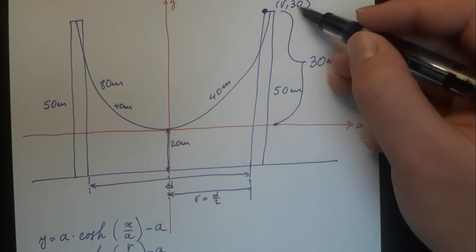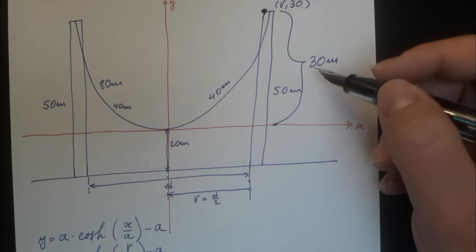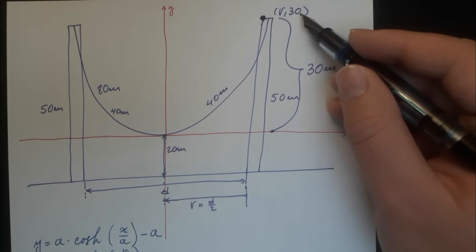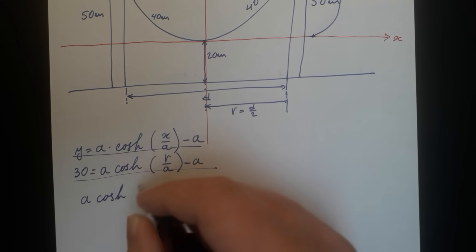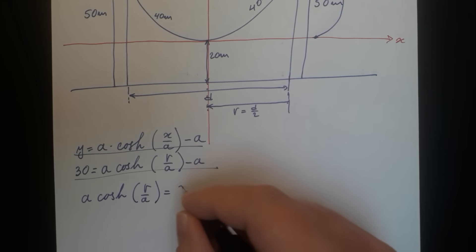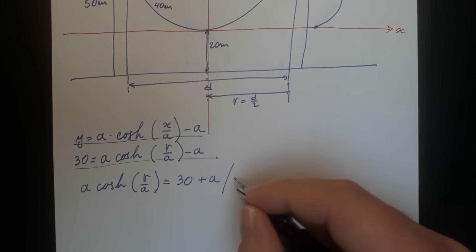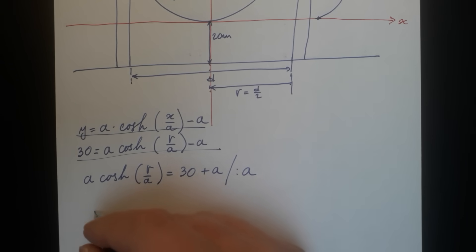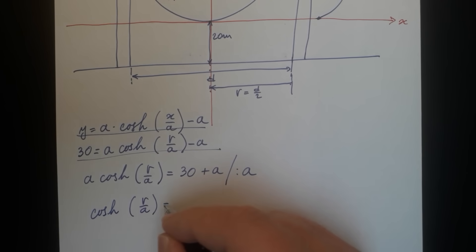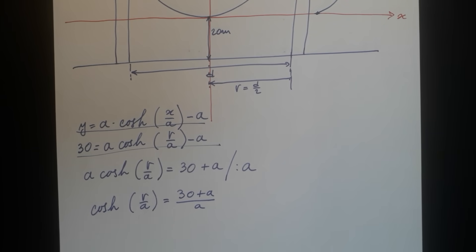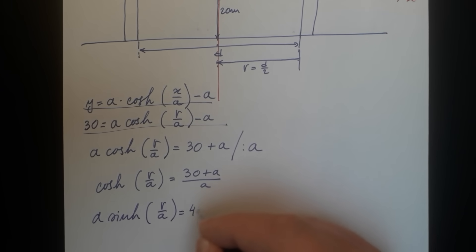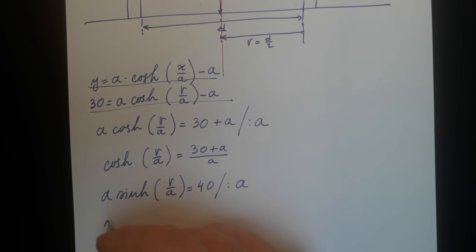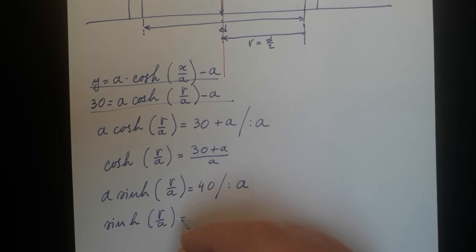That equation is: 30 = A·cosh(R/A) − A, because the point (R, 30) belongs to the catenary. This simplifies to A·cosh(R/A) = 30 + A, and dividing both sides by A gives cosh(R/A) = (30 + A)/A. We get a second equation using the length of half the cable: A·sinh(R/A) = 40. Dividing by A gives sinh(R/A) = 40/A.